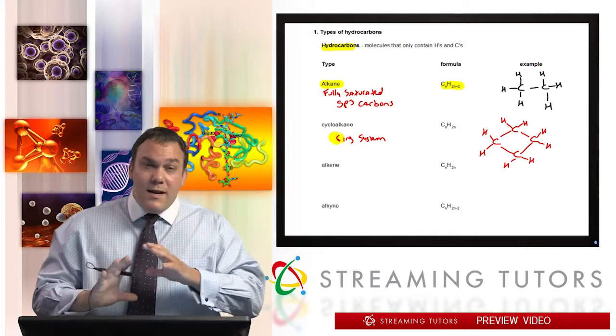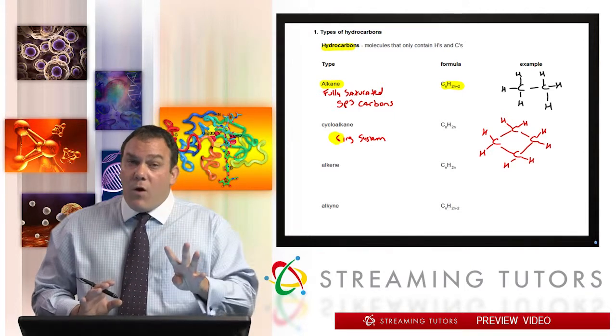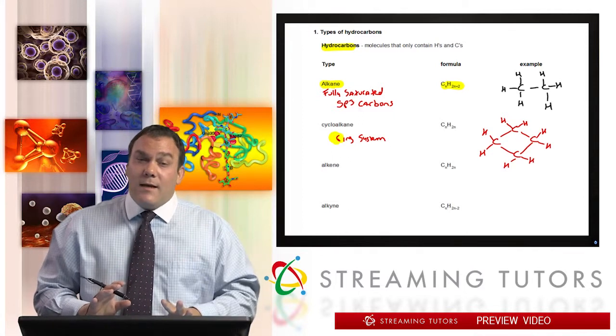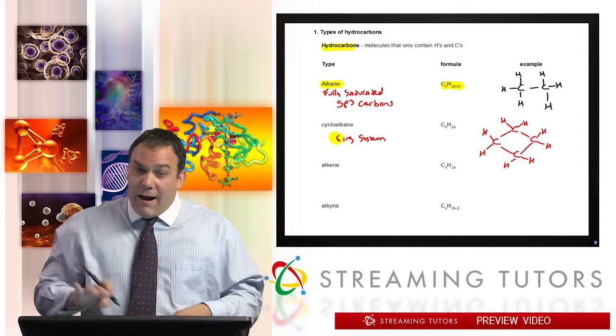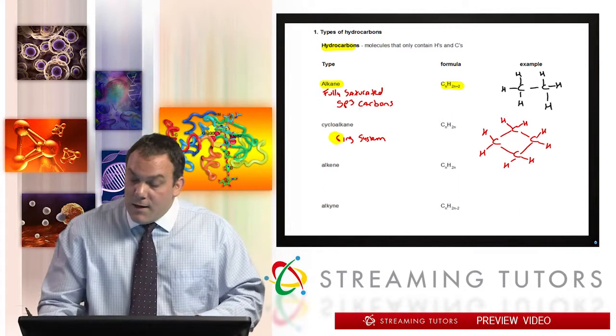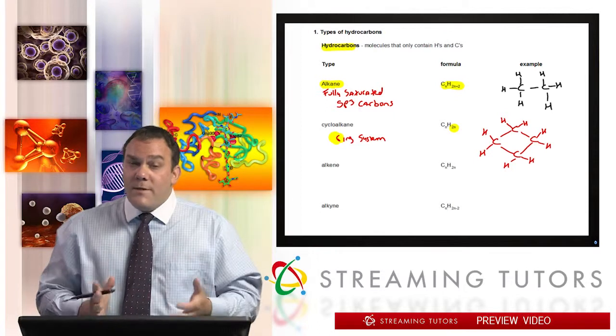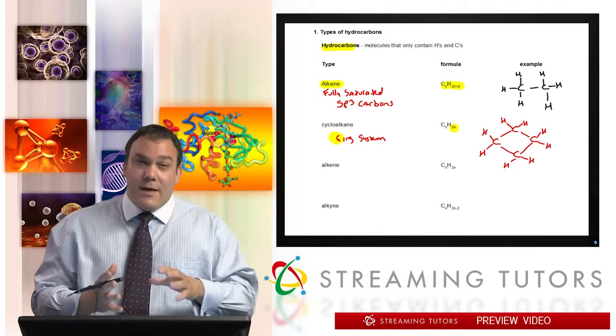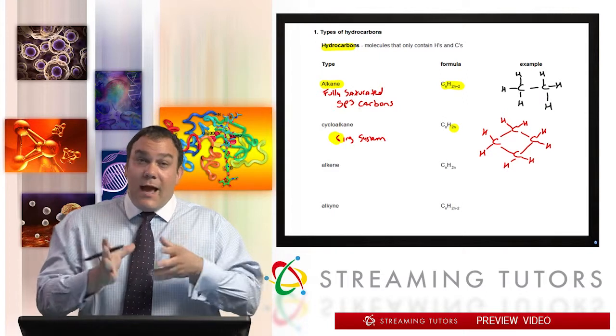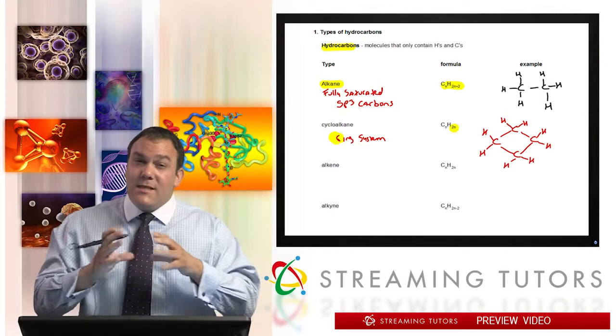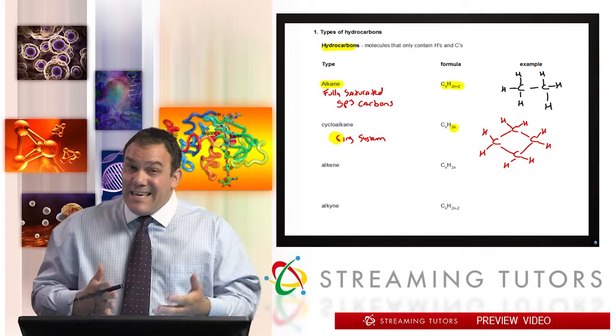So this is a cycloalkane because it's a ring, and that's what it would look like in terms of filling in all the H's. If you think about the formula here, it should be four carbons times two is eight, and as you could see we have eight H's all around this cyclic system. So that's how this formula works: two times the number of carbons, in our case four, that'll tell you the H count. Now this cycloalkane is sp3, every carbon is single bond, there's no double bonds.